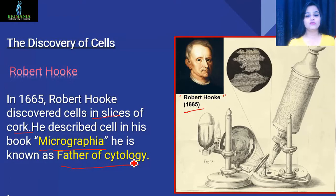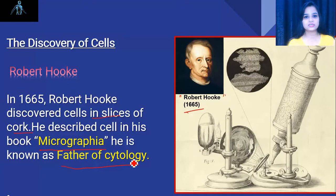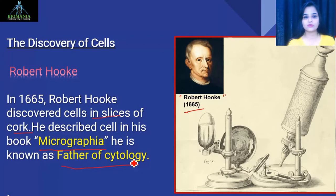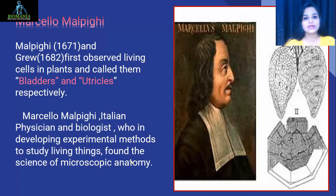Robert Hooke is known as the Father of Cytology — remember this. For any exam question from this slide, it will come from three points: the scientist's name Robert Hooke, the year 1665, the name of his book Micrographia, and that he is the Father of Cytology. So remember these three key points clearly.